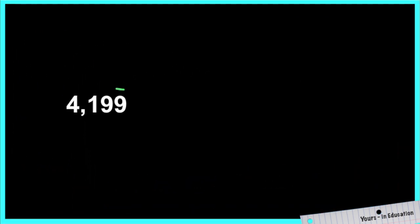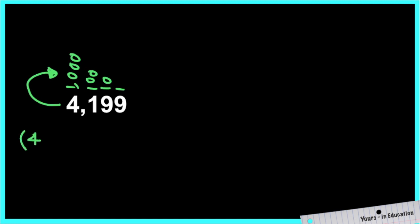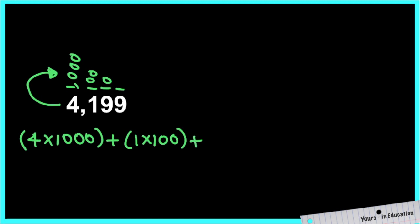Next exercise. Now we have the ones, tens, hundreds, and moving up to the thousands. We're going to multiply the number of groups that we have by the place value of each digit. We have 4 groups of 1,000, plus 1 group of 100, plus 9 groups of 10, plus 9 groups of 1.